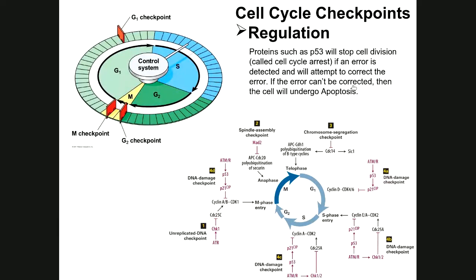When cancer occurs, we typically have an accumulation of DNA mutations — something has gone wrong, sometimes during DNA replication. Proteins such as p53 can't fix the errors, and at the same time something goes wrong where they're not able to push the cell into apoptosis. The cell continues to divide. Cancer cells are mutant cells no longer following the rules of cell division — they just divide out of control, growing as long as they have the nutrients they need.